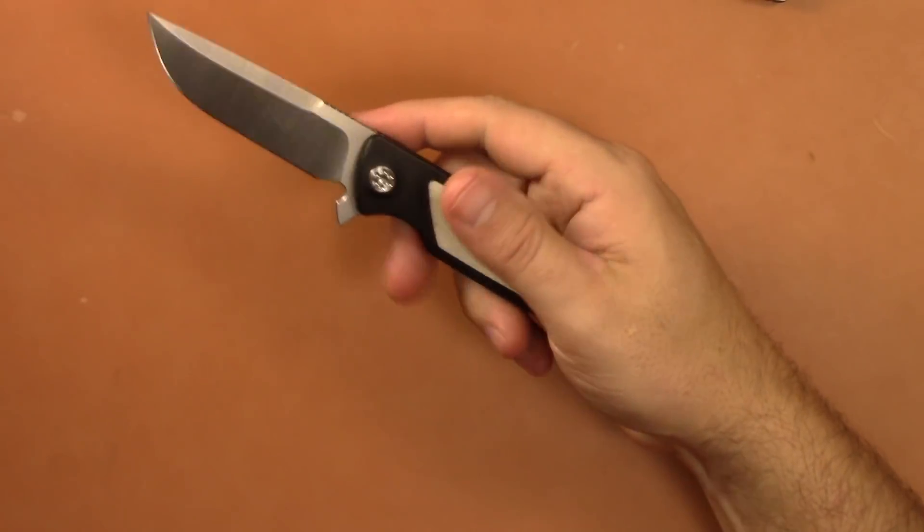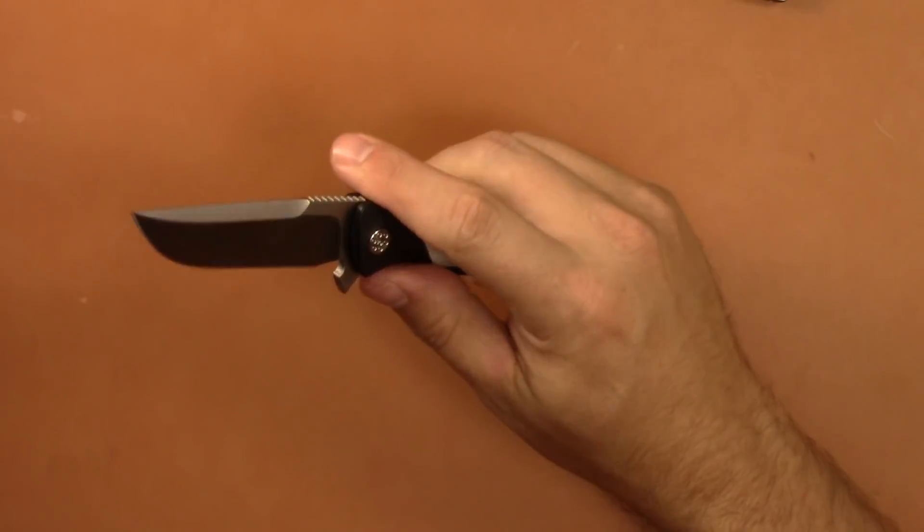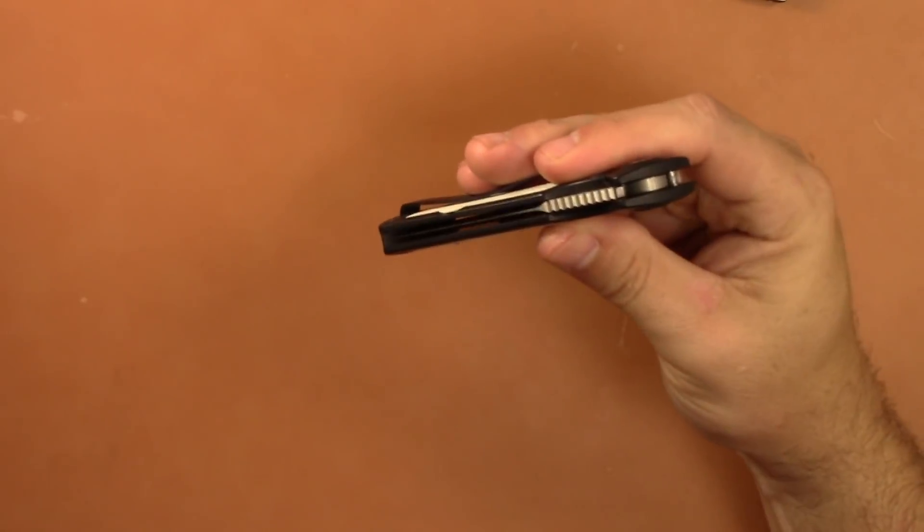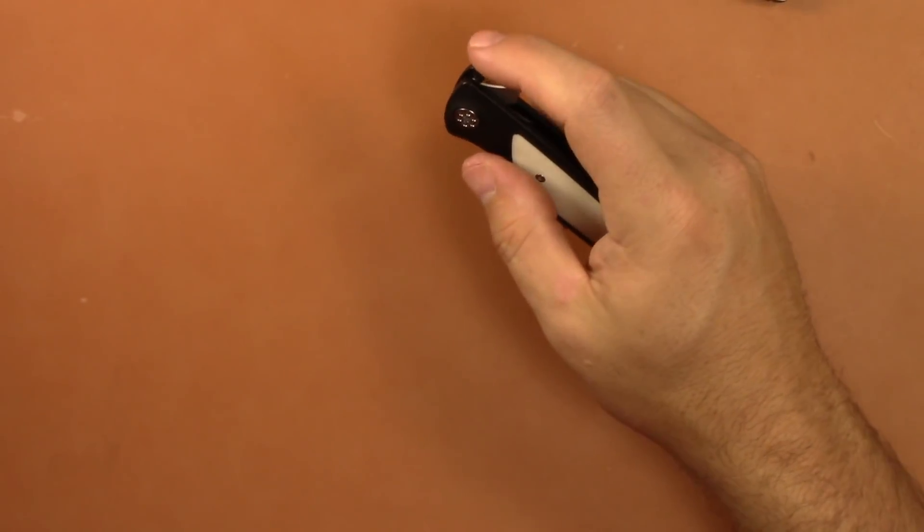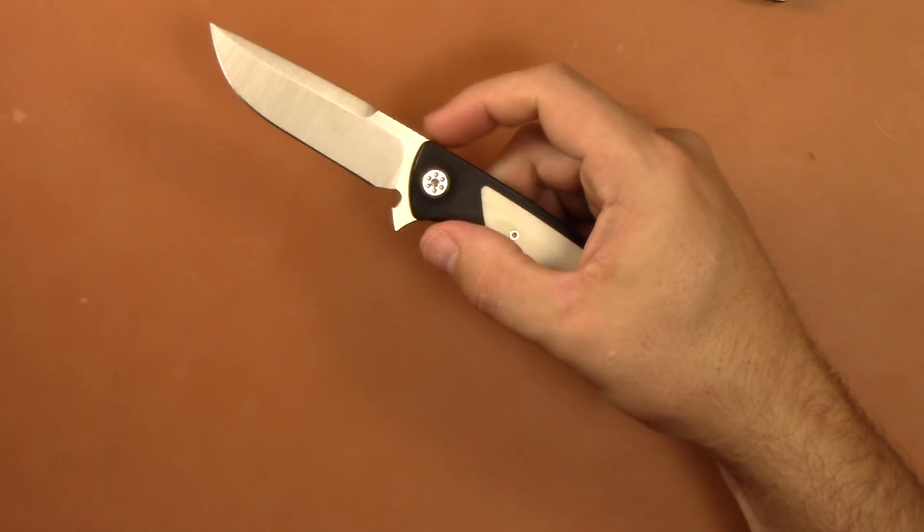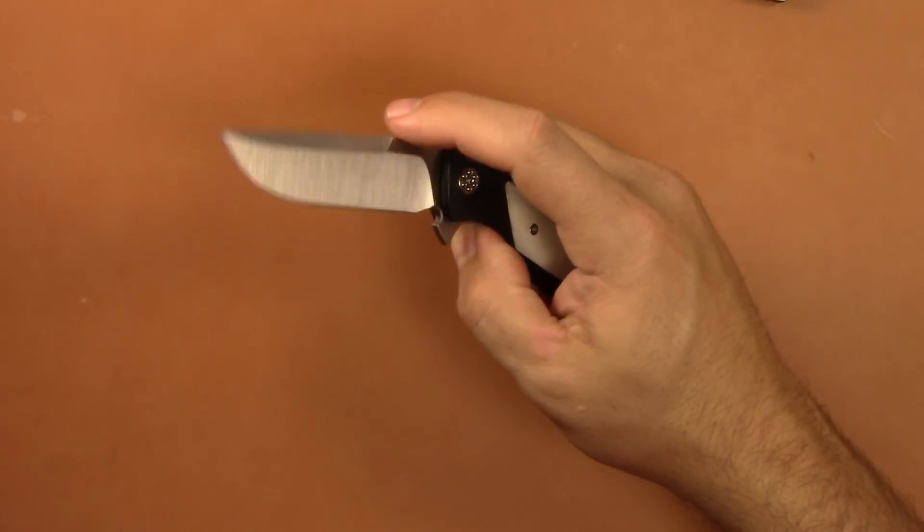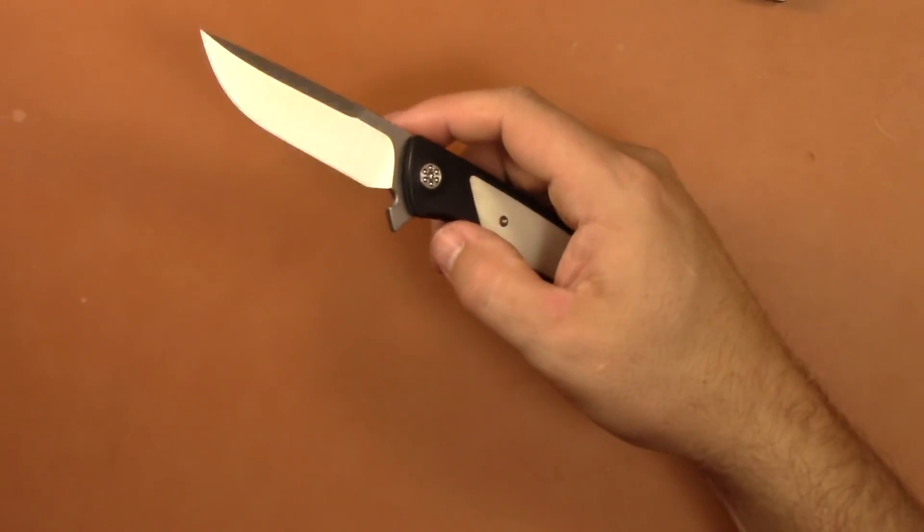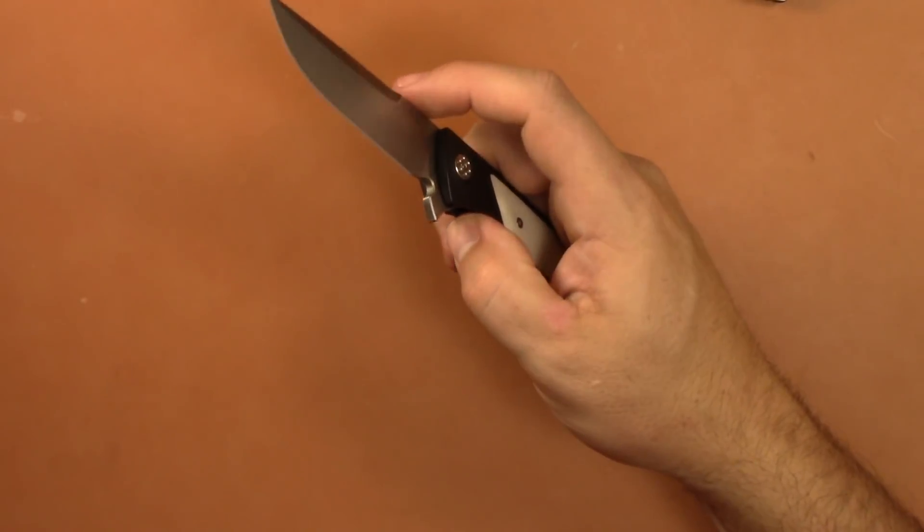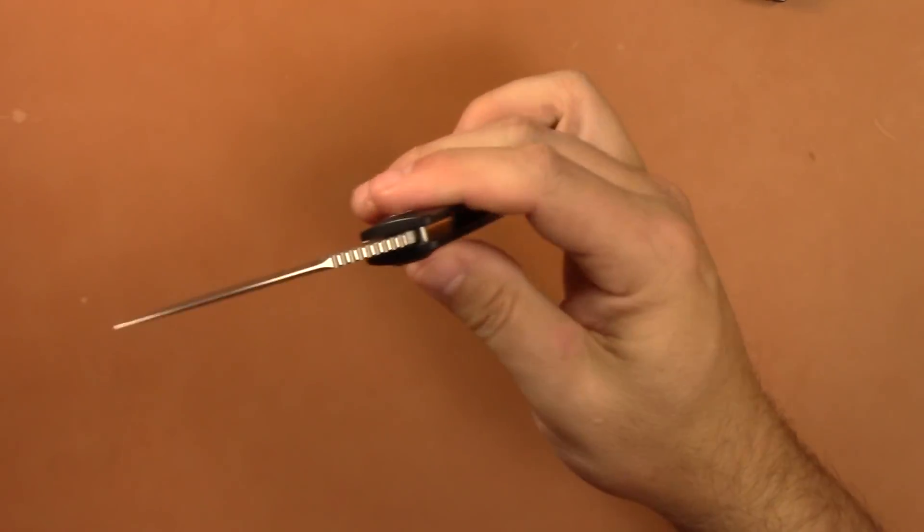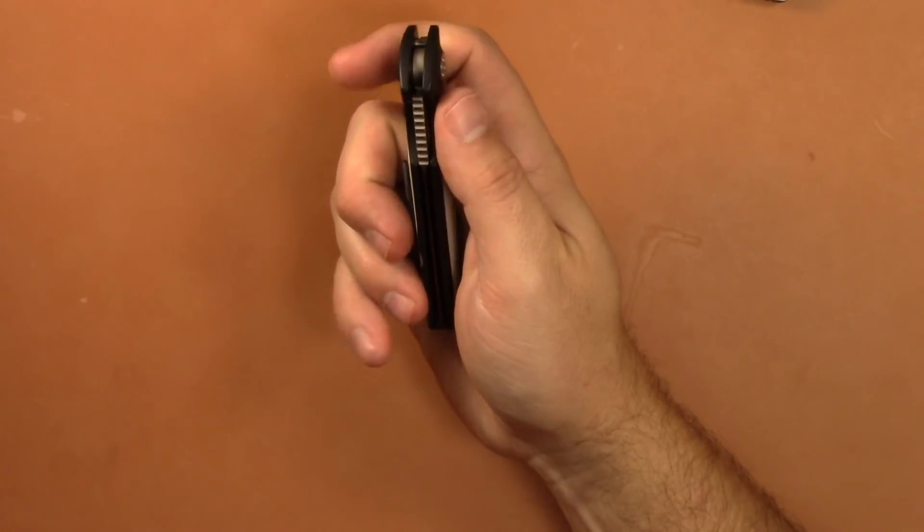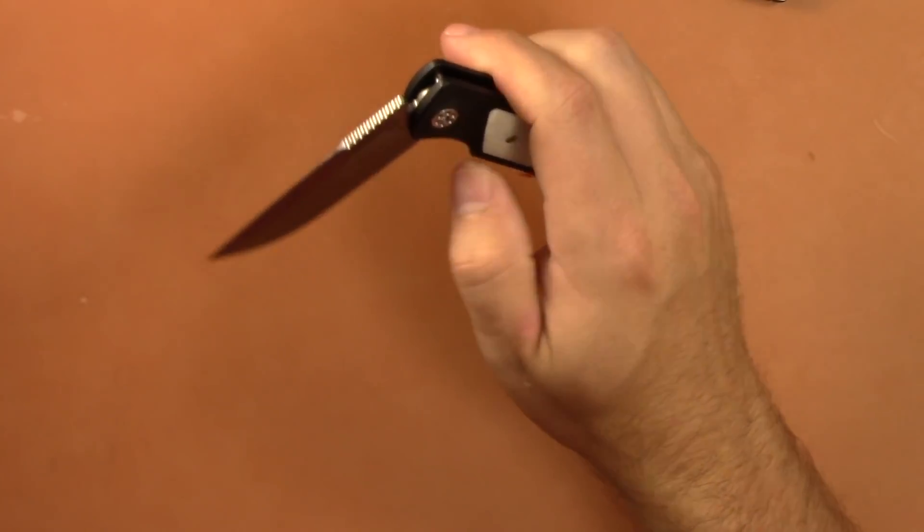First impressions are fantastic. Great flipping action. I'm sure it'll break in even more. The detent is crisp, it's nice, right where I'd expect it with Sharp by Design knives. The flipper tab design that Brian does is definitely conducive to good flipping. You can light switch it, you can push button it as well. It's not like drop shut close but it's smooth and I'm sure it'll break in more. It is literally brand new. Centering is perfect, right on.